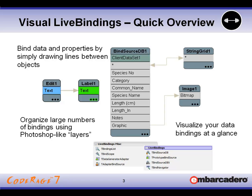The visual LiveBindings designer also introduces layers management. You can organize large numbers of bindings into Photoshop-like layers and just drag a bounding box over your components or shift-select multiple components shown in the LiveBindings designer, then right-click and add them to a new layer. You can toggle visibility between layers, which allows you to visually organize your project — very useful if you have a lot of components on your form.